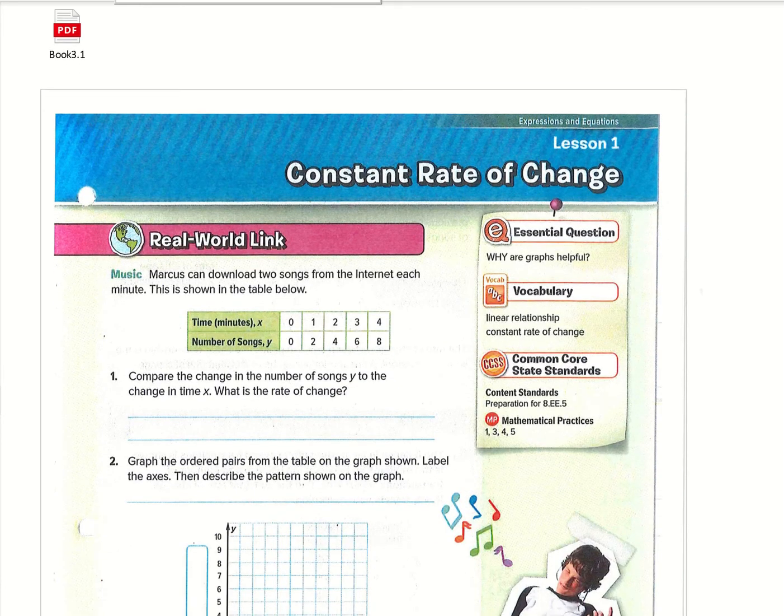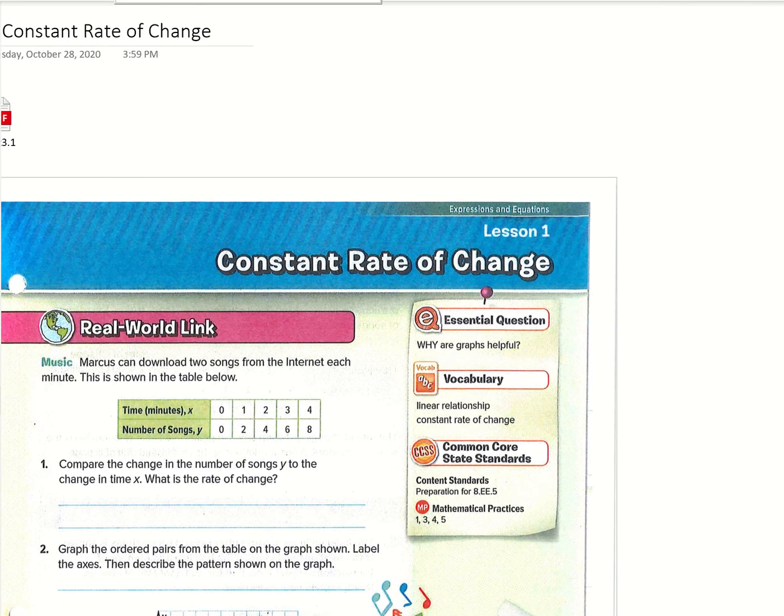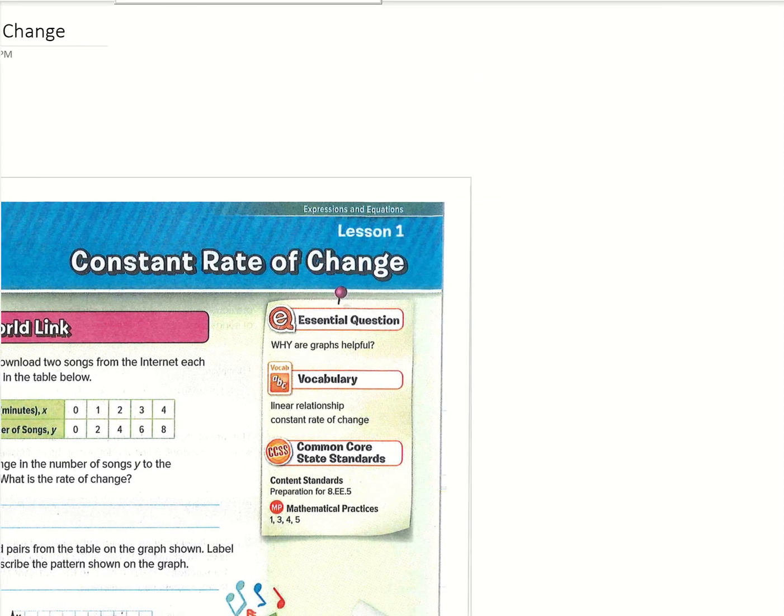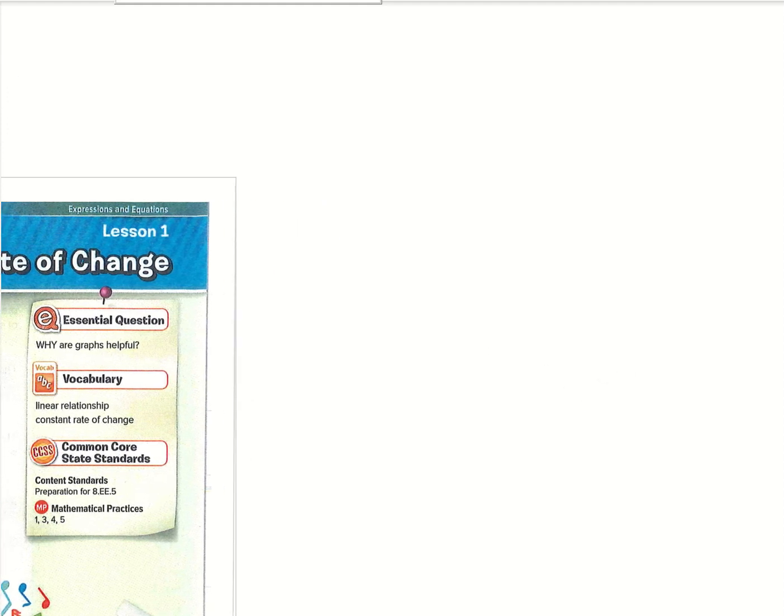Before we get into 3.1, we're going to look at a refresher on graphing. If I have an ordered pair, remember that first number is X and that second number is Y.